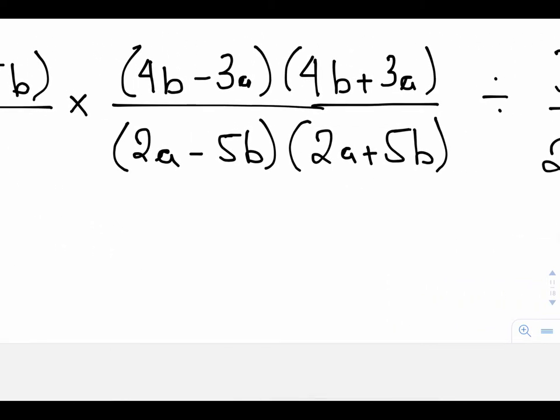In the second fraction, our denominators have two factors: 2a minus 5b and 2a plus 5b. In both cases, I cannot have 2a equal either the positive or the negative of 5b. Replace 2a with positive or negative 5b, and you will get a 0 in your denominator.